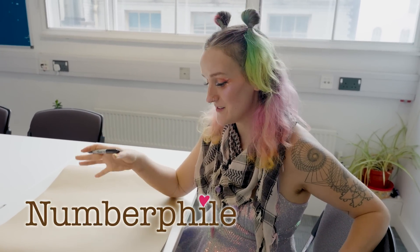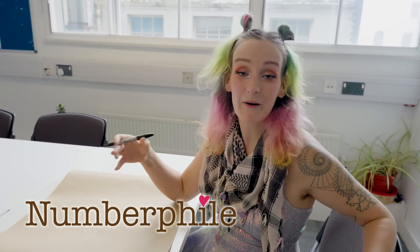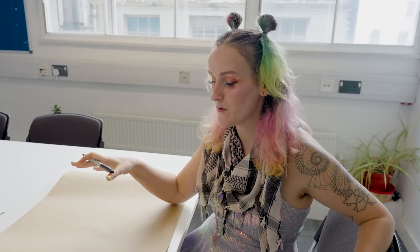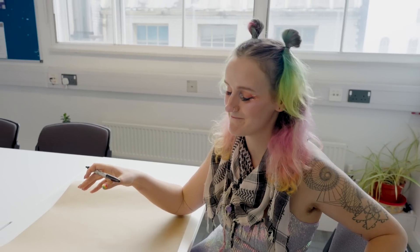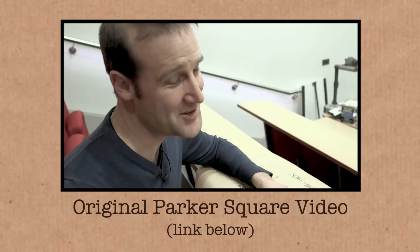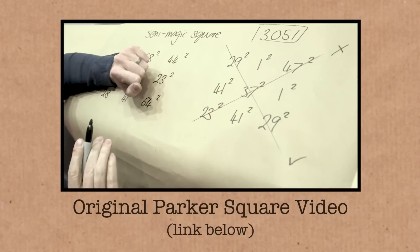So, true story, I couldn't sleep one night and I thought I would try and do just a little bit of maths to send myself to sleep. I thought, hold my hot chocolate, I'm going in, I'm gonna try the magic square of squares, which famously Matt had a go at, the Parker Square, and also failed at.